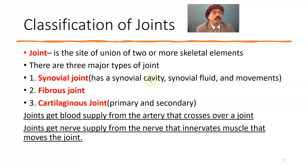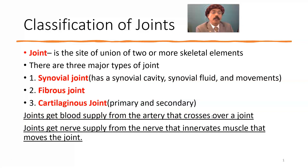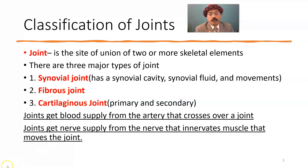Synovial joint has a synovial cavity, synovial fluid, and it has movement. Fibrous joint and cartilaginous joint may have primary and secondary types. Joints have mostly movement in the synovial joint, while fibrous and cartilaginous joints have less or minimum movement.